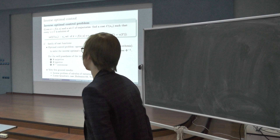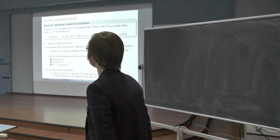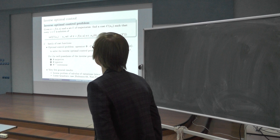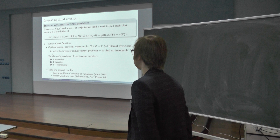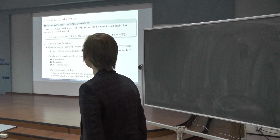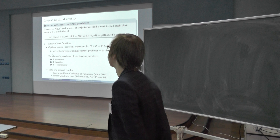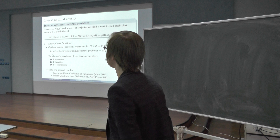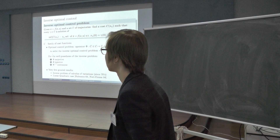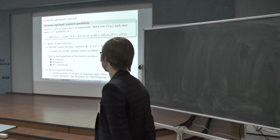We will consider here only the question of injectivity. This question is that P sends different costs to different optimal syntheses, so that in the inverse optimal control problem we are sure that from our given optimal synthesis we will find a unique cost function. We should remark that if we multiply a cost function by a positive constant, its optimal synthesis doesn't change. So when we consider a family of cost functions we should factorize it by multiplication by a constant.